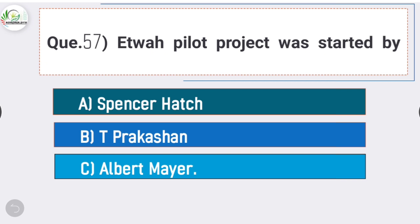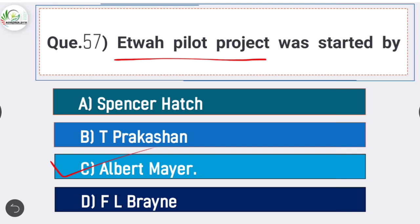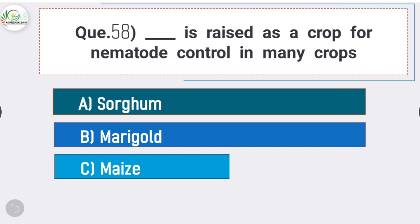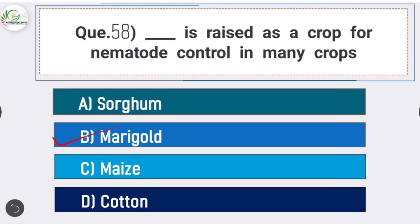Question number fifty-seven: Etawah Pilot Project was started by - answer is option C - Albert Mayer. Etawah Pilot Project was started by Albert Mayer. Question number fifty-eight: dash is raised as a crop for nematode control in many crops - answer is option B - marigold. Marigold is raised as a trap crop for nematode control in many crops.